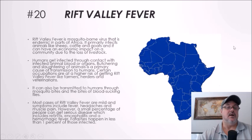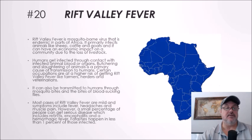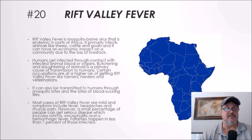Number twenty: Rift Valley fever. Rift Valley fever is a mosquito-borne virus endemic in parts of Africa. It primarily infects animals like sheep, cattle, and goats, and can have an economic impact on communities due to livestock loss. Humans get infected through contact with infected animal blood or organs; butchering and slaughtering animals is a primary cause of transmission. Certain occupations are at higher risk, including farmers, herders, and veterinarians. Rift Valley fever can also be transmitted to humans through mosquito bites and through the bites of blood-sucking flies.